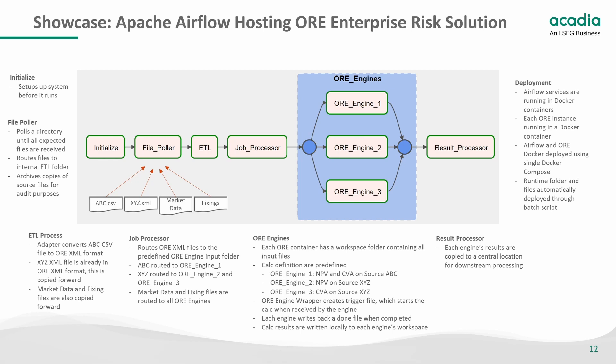Next is the job processor — it routes the ORE XML files to predefined ORE engines. We have three here: the ABC file goes to engine one, and the XYZ file goes to engines two and three. Each is doing different calculations, and the market data files go to all three engines. Each ORE engine is a container that spins up and runs a pre-configured calculation. Results are written locally to each engine's workspace, then copied to a central location for downstream processing. Airflow is running in Docker containers, each ORE instance in its own Docker container, and all of this is deployed locally using Docker Compose.